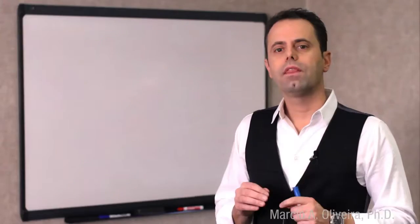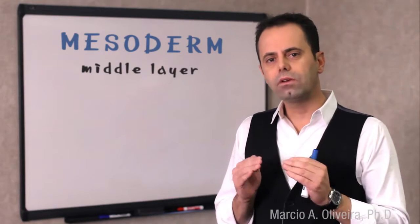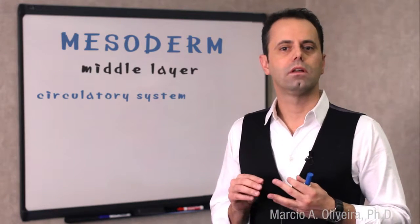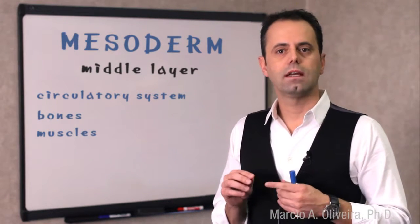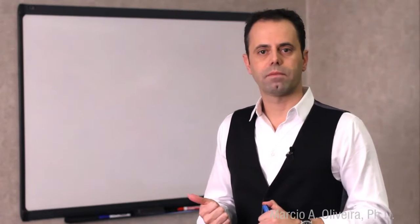An early differentiation process starts as development proceeds, leading to the formation of different parts of the human body. The mesoderm, for example, is the middle layer which will become the circulatory system, bones, muscles, the excretory system, and the reproductive system.